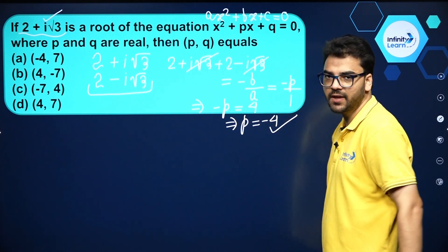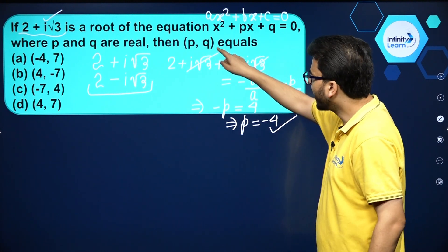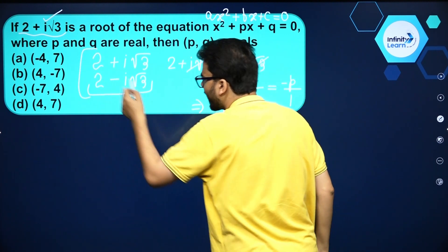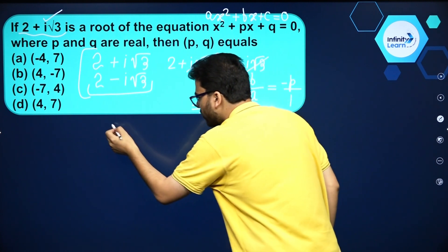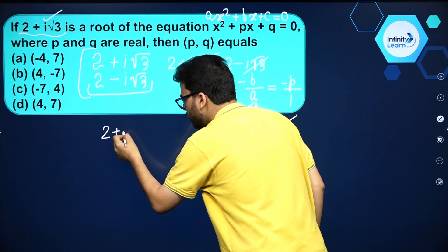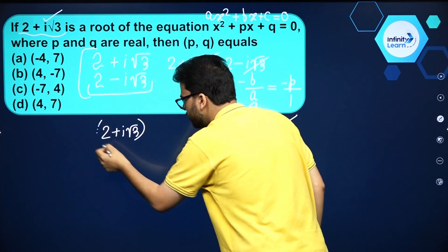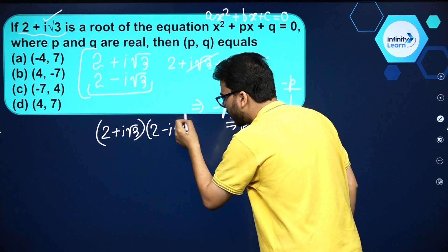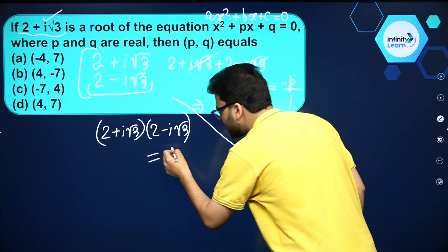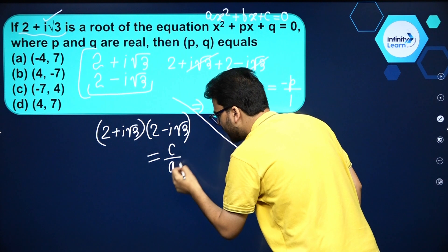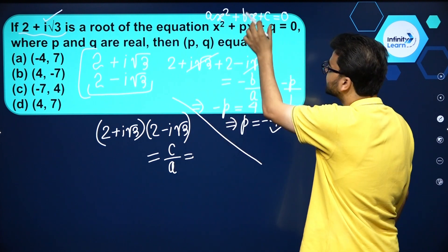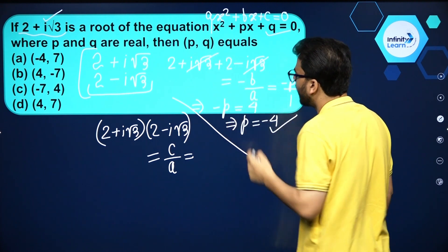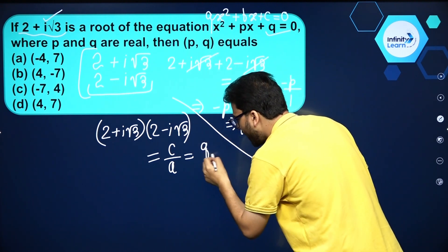Now we have to find the value of q. For that, we take the product of the roots. The product of the roots is (2 + i√3)(2 - i√3), and that equals c by a. Comparing with the standard form, c is q and a is 1, so the product equals q by 1, which is q.